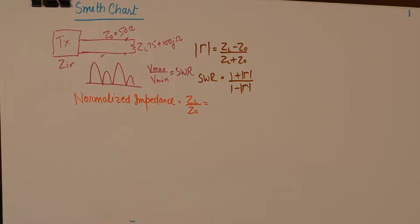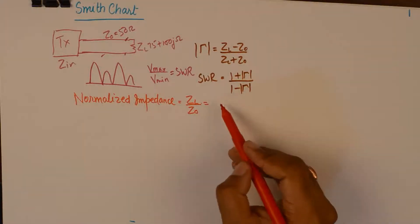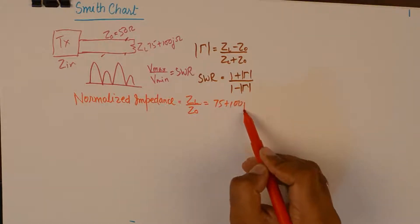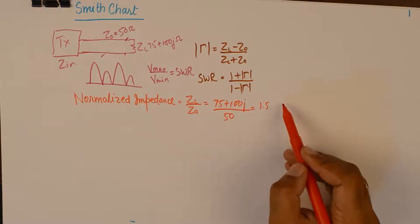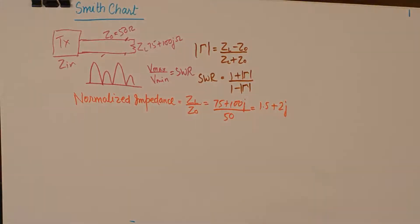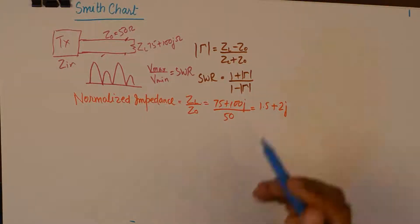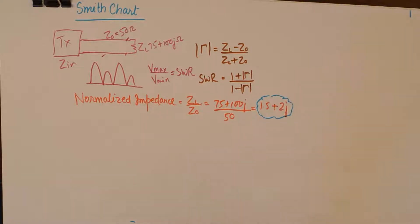We plot the normalized impedance of the load on Smith's chart. And for the case that we are discussing, where the load impedance is 75 plus 100J and the characteristic impedance is 50, we get a normalized impedance of 1.5 plus 2J. Now, having calculated this value, we need to plot this value on the Smith's chart now.